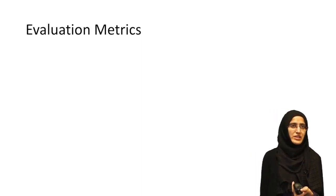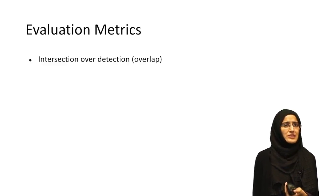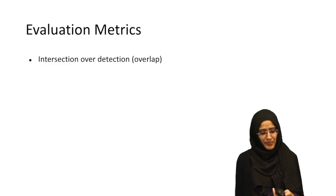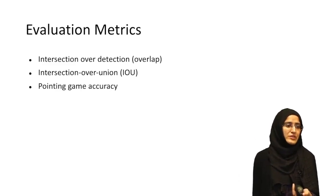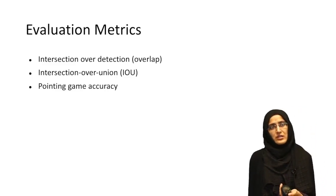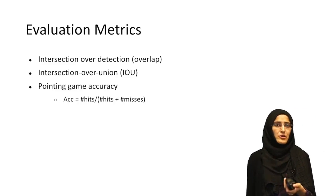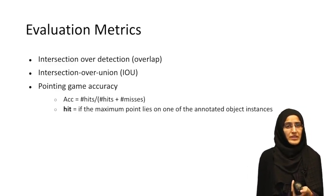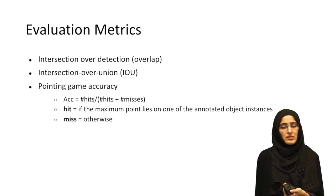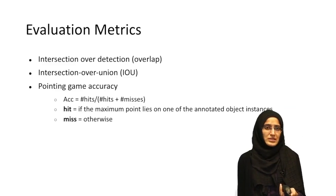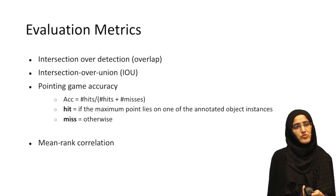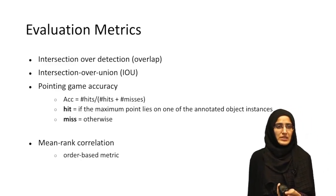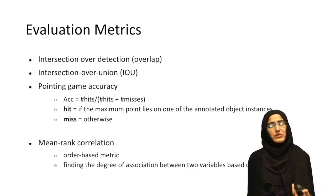For quantitative evaluation, we use the following metrics. We use intersection over detection, which measures overlap between the ground truth bounding box and the predicted bounding box. We use intersection over union (IoU). We also use pointing game accuracy, a metric for evaluating weakly supervised visual grounding, computed as hits divided by hits plus misses — a hit is counted when the maximum point on the attention map lies on one of the annotated object instances, otherwise it is a miss. On VQA HAT, we evaluate using mean rank correlation, an order-based metric that finds the degree of association between two variables based on their ranks.